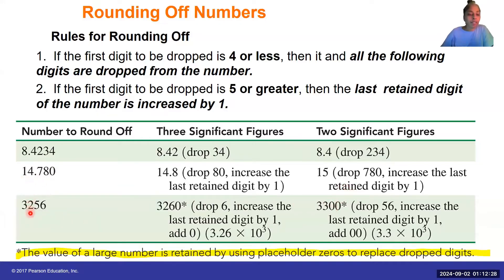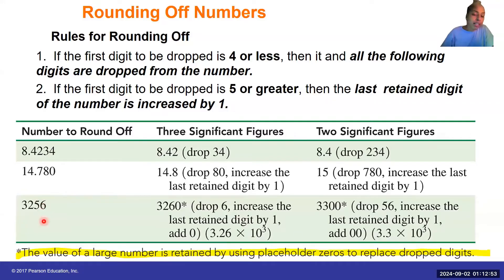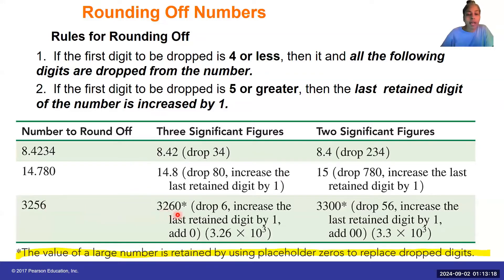What if I have 3,256 and I want to round this off to three significant figures? I only want to keep these three digits, but I can't get rid of the last place because this number is greater than one. I can't call it 325 or 326 — I have to create a placeholder. So I look at the six, round this five up to six, and add a zero as a placeholder. Notice that I use the zero as a placeholder.